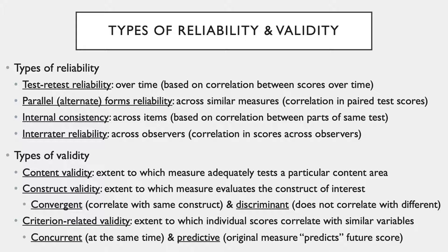Criterion-related validity refers to how adequately a measure can infer, predict, or estimate some kind of outcome. Concurrent validity is used when evaluating two measures at the same time. Predictive validity refers to when the original measure predicts some future score — for example, how well SAT scores would predict an individual's college GPA.